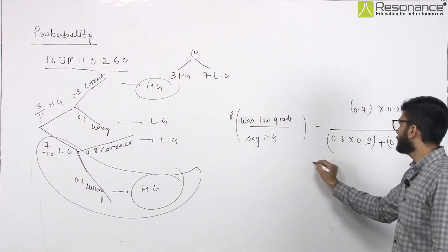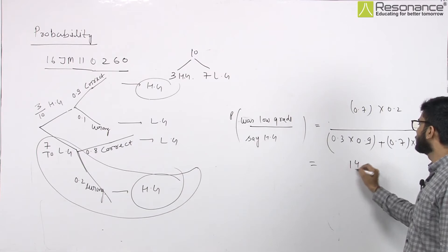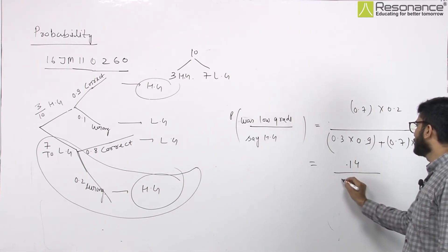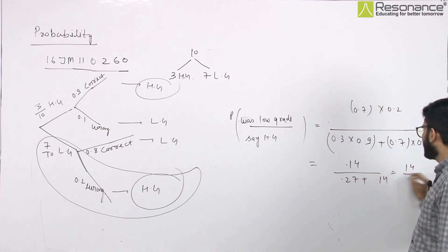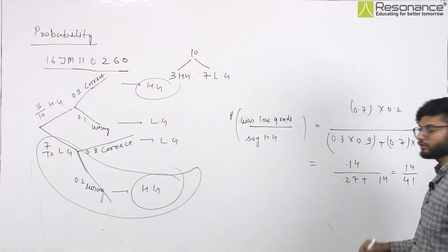So, if we calculate here, it will be 0.14. And this will be 0.27 plus 0.14. So, this will calculate. Point to point cancel. 14 upon 41. So, this will be the value.